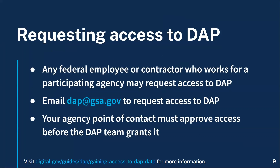Any federal employee or contractor who works for a participating agency may request access to DAP. To do so, email DAP at GSA.gov. Your agency point of contact must first approve your access before the DAP team can grant it.